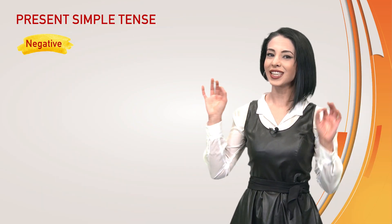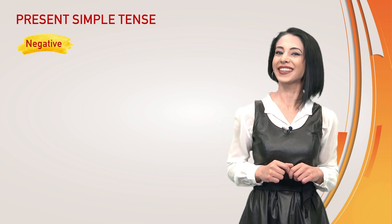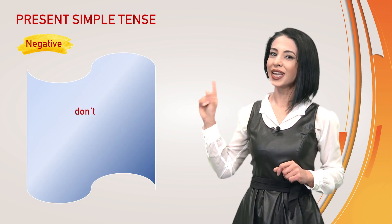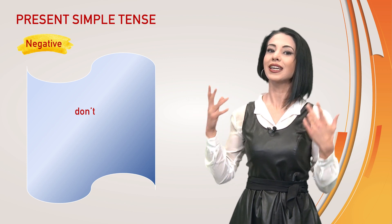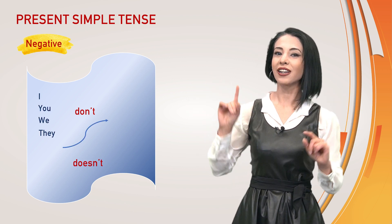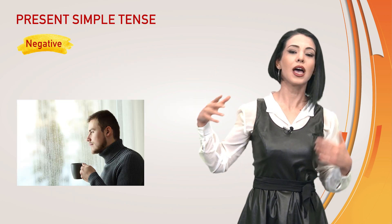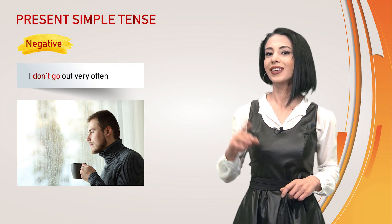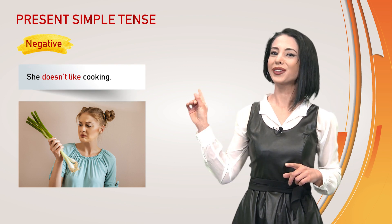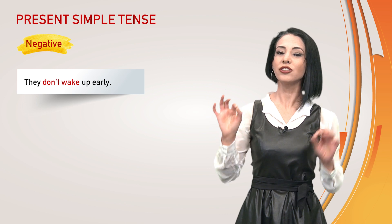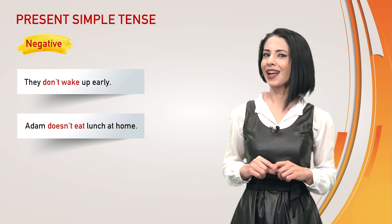What about negatives? We use not after do and does to make the sentences negative in present simple: do not / don't, does not / doesn't. Use the bare form of the verb. Look at the picture — he says: I don't go out very often. Look at her face — she doesn't like cooking. They don't wake up early. Adam doesn't eat lunch at home.